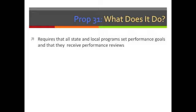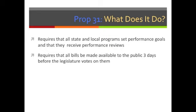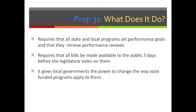Prop 31 requires that all state and local governments set performance goals and receive performance reviews. It requires all bills be made available to the public three days before the legislature votes on them — excluding public disaster and terrorism bills. It also gives local governments the power to change the way state-funded programs apply to them unless the legislature or state agency vetoes the change within 60 days.